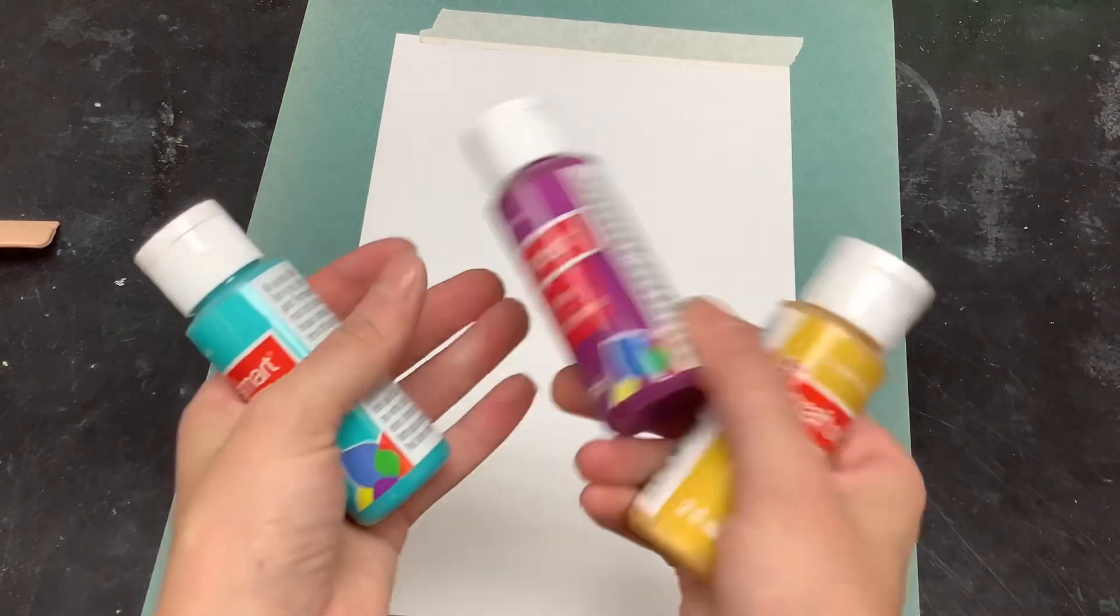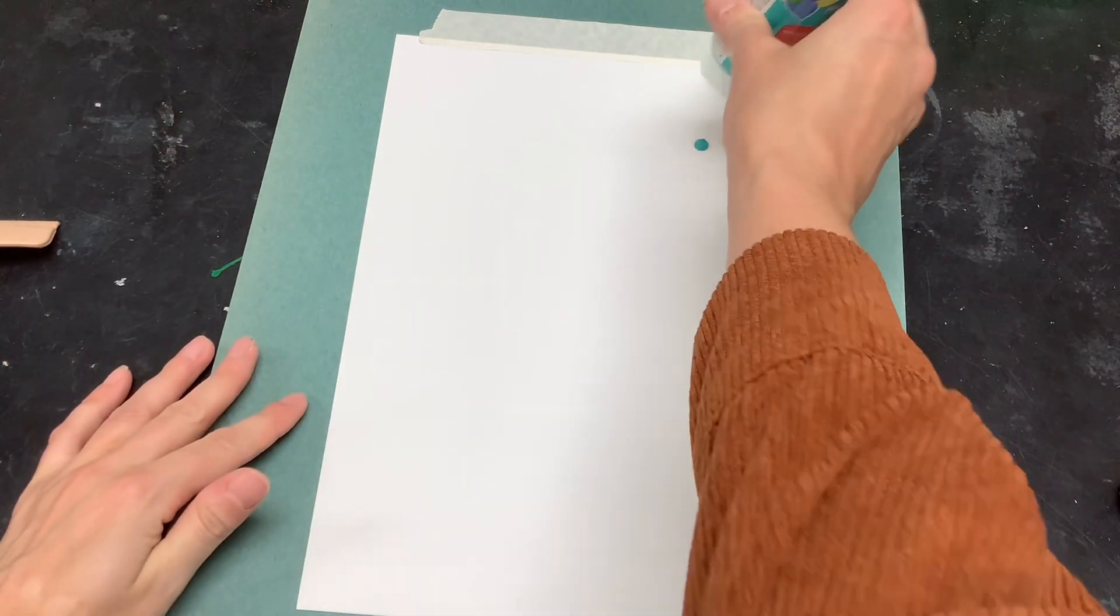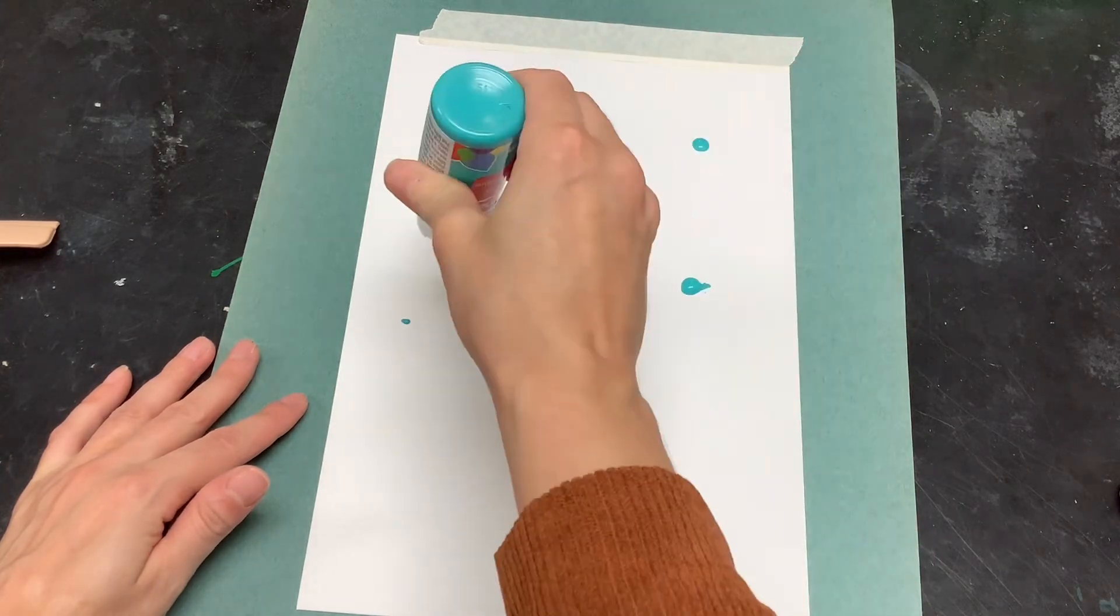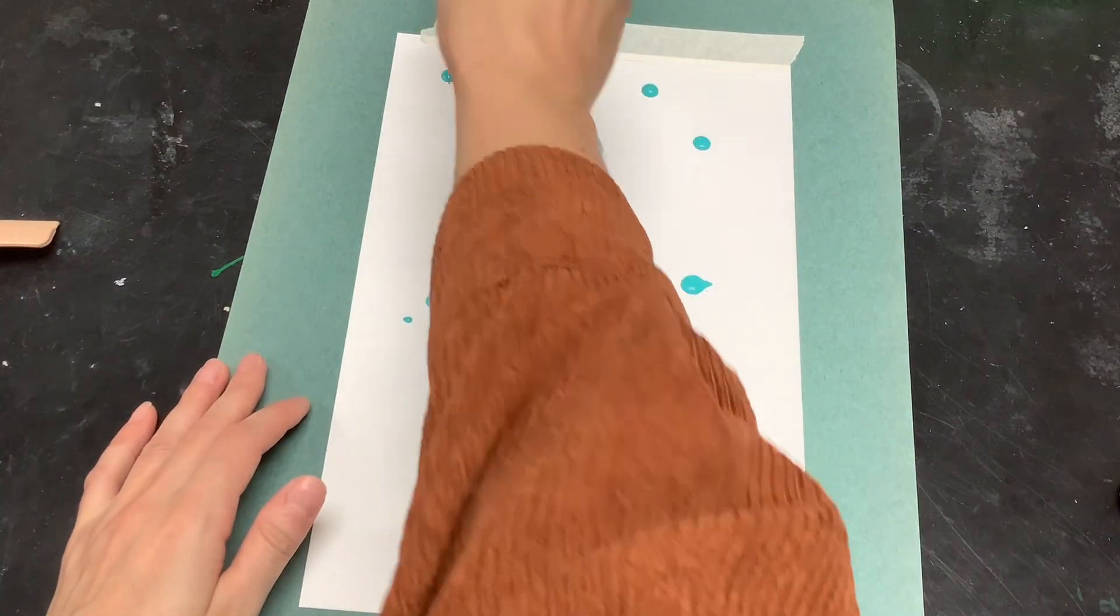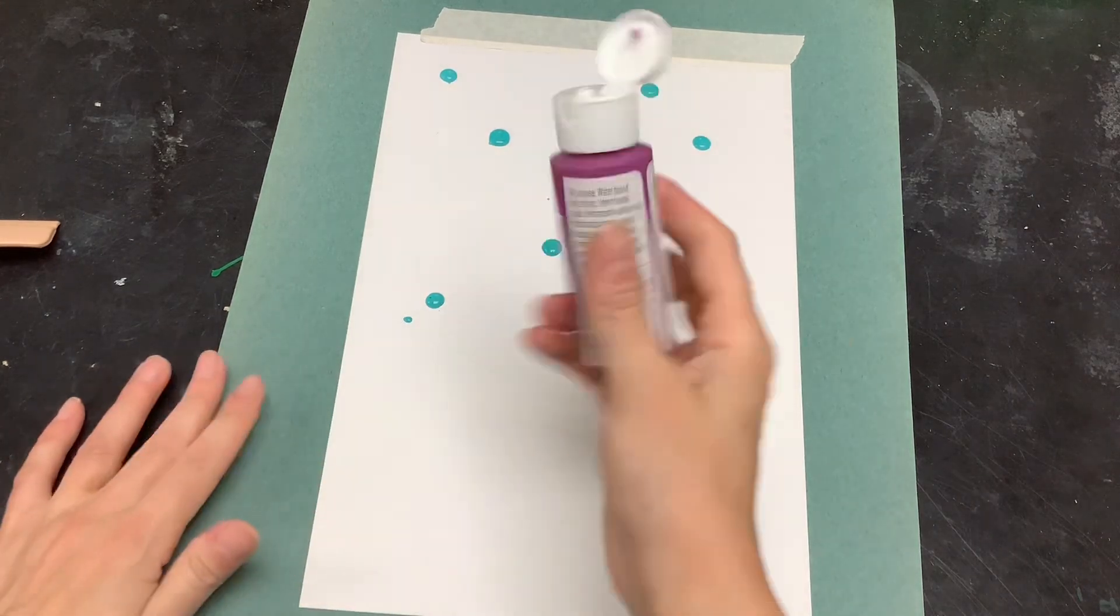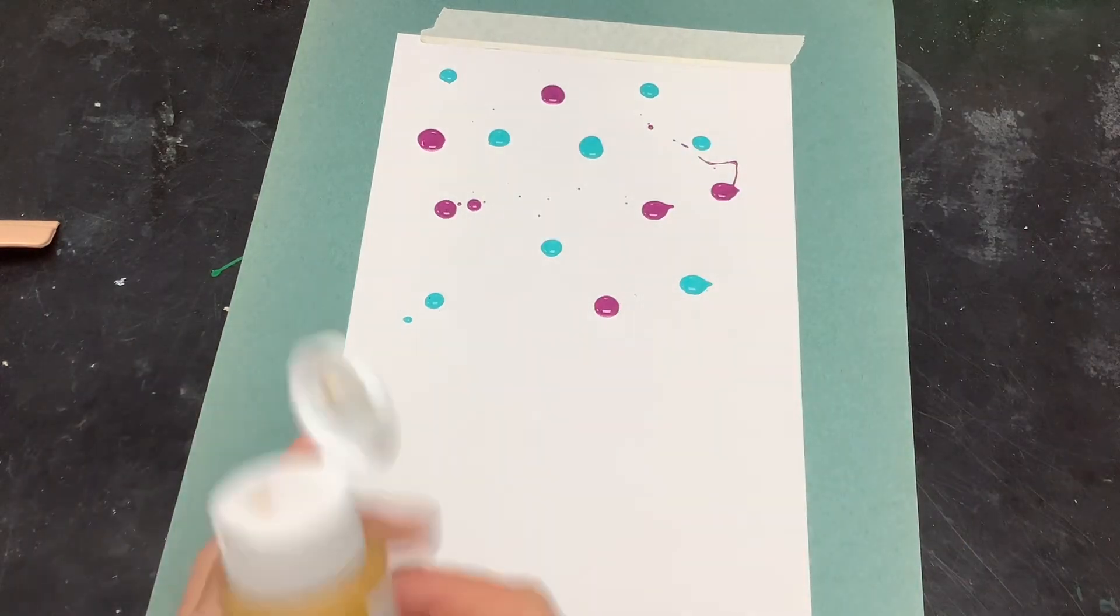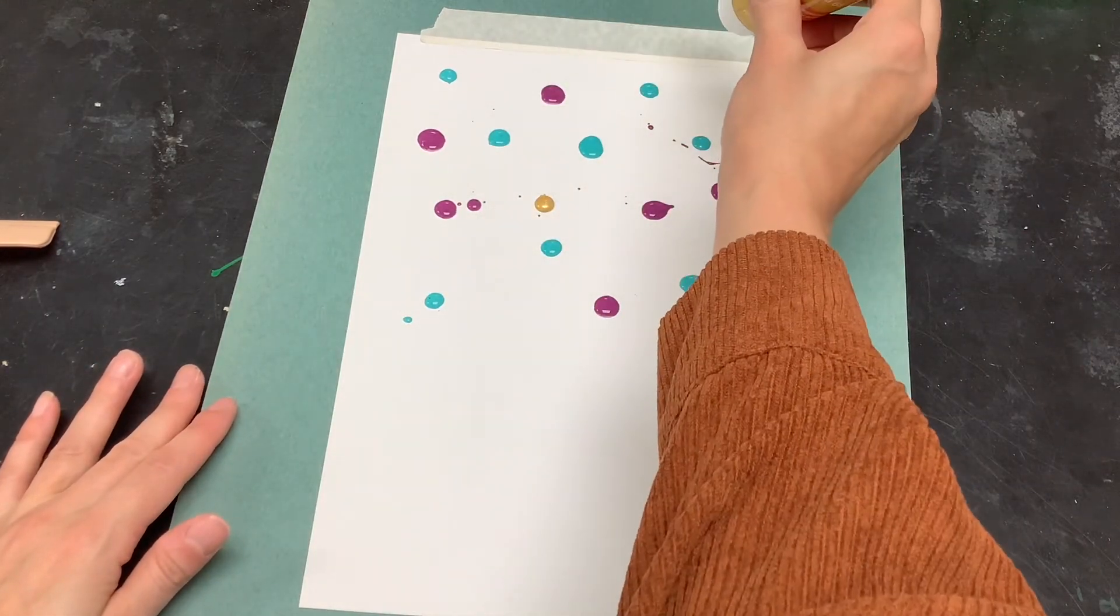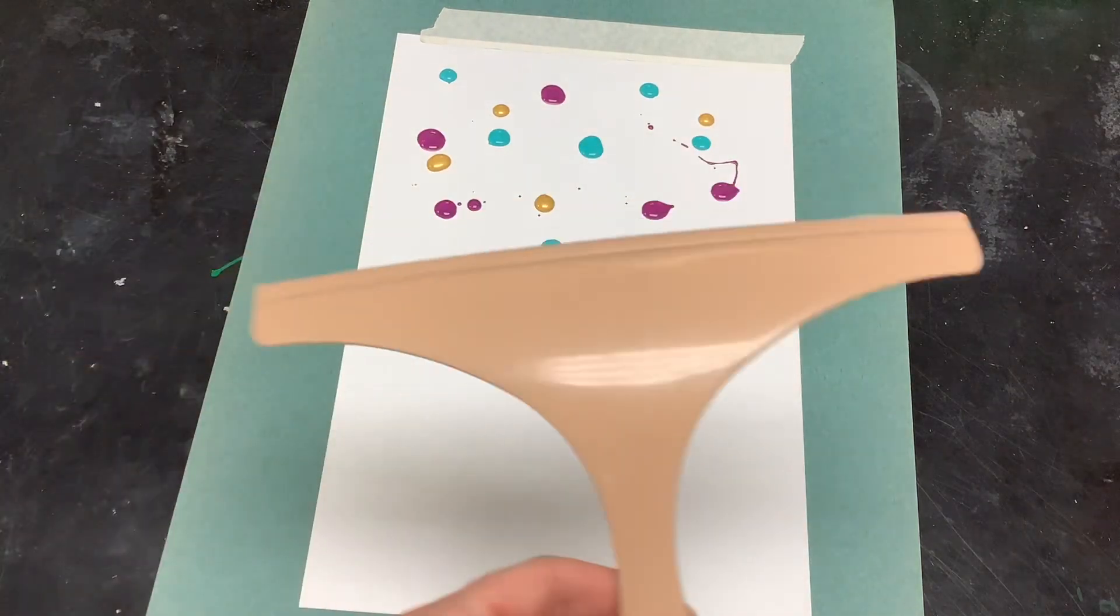Then you will choose two or three different colors and you are going to make little dots of color on the top half of the paper. You will want it vertical or up and down. You can place your dots however you would like. I suggest separating each color slightly.